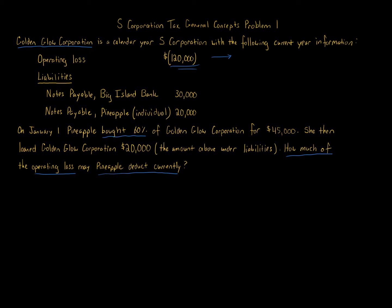This goes along with comparing partnership loss limitation rules versus S corporation rules, because there are differences in how much loss can be taken considering liabilities. We are an S corporation here, not a partnership. Also, there's a distinction based on whether there's a personal loan involved — which we do have here, since Pineapple, an individual, personally loaned the S corporation money, and that will have an effect.